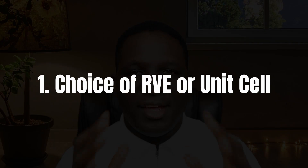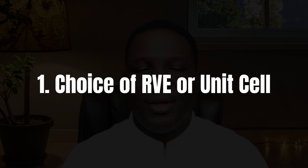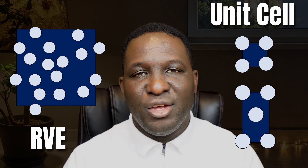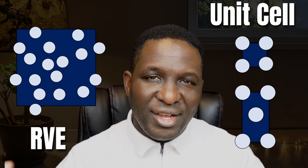The first thing you need to consider when doing representative volume element modeling within Abaqus is the RVE choice or the unit cell choice. As the name suggests — representative volume element — what element in your domain is most representative of the problem you're trying to solve? People either decide to use a unit cell or an actual RVE. If you're modeling a homogeneous architecture, then your RVE would have to be a unit cell.